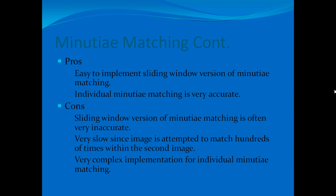The pros of minutiae matching are that the sliding window version is easy to implement, and individual minutiae matching is very accurate. The cons are that the sliding window version is often very inaccurate in both one-to-one and one-to-all forms, and it is very slow since it attempts to match hundreds of times within the second image — and in one-to-all matching, thousands of times. The individual minutiae implementation, while appearing simple on paper, is very complex to develop in software.